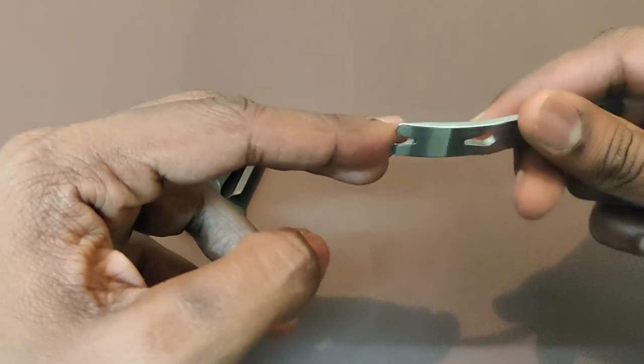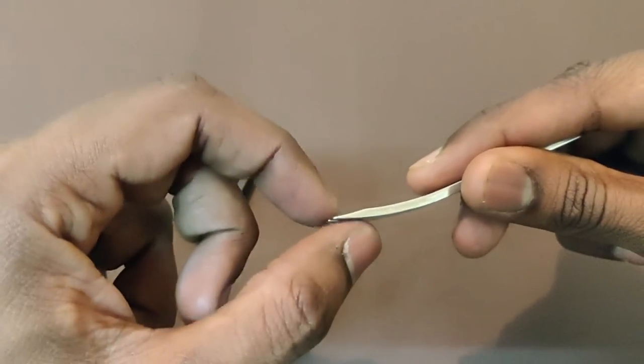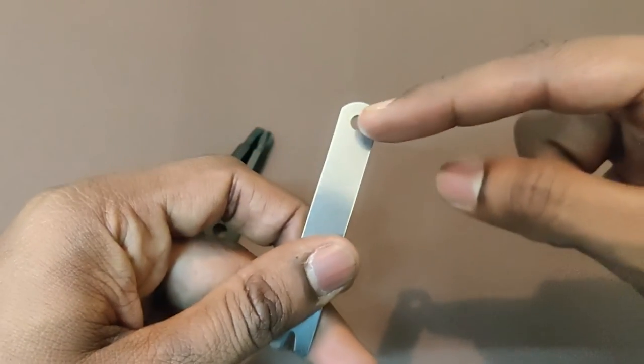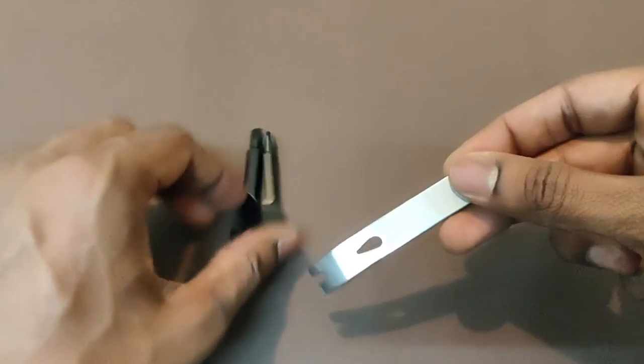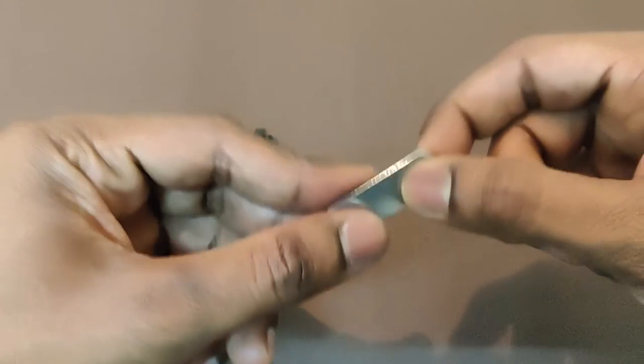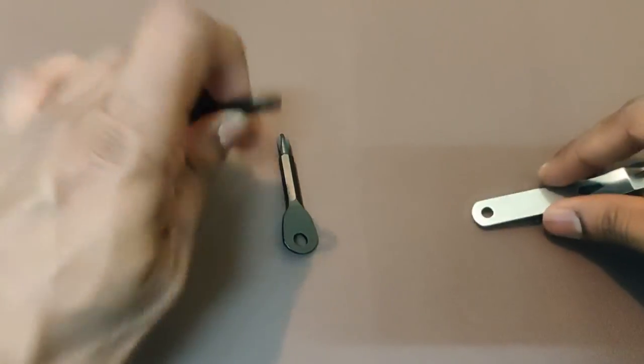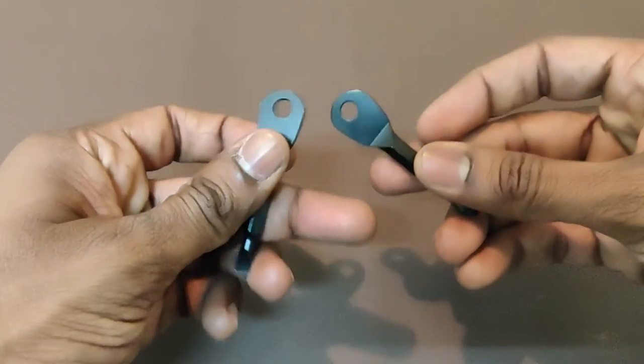And of course you can scrape some items by using this. For all these three, for this mini pry bar, you do have a key ring hole where you can attach to your key ring or carabiner. Even for this screwdriver, you do have one.